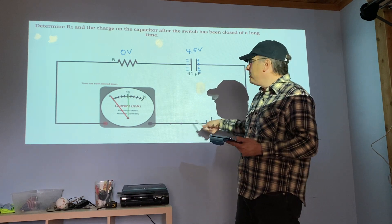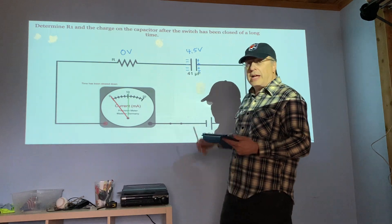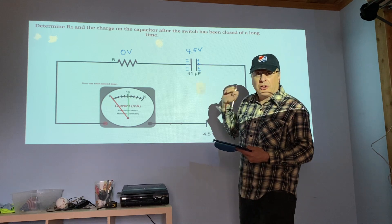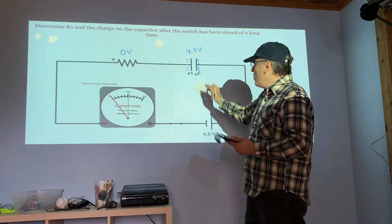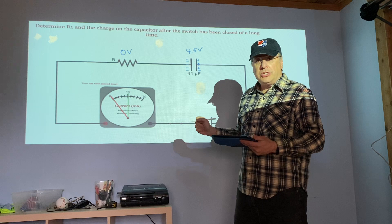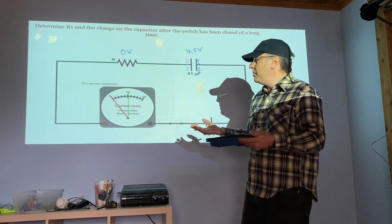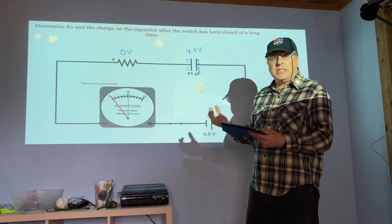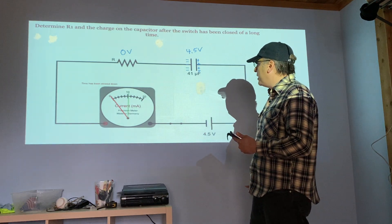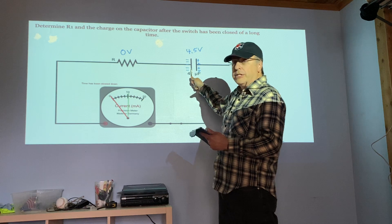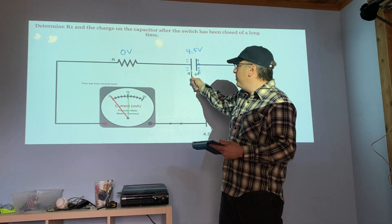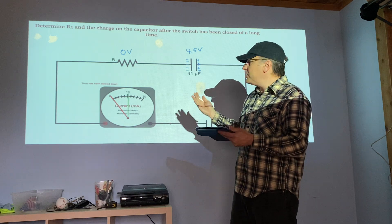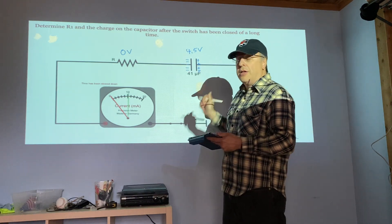The only time anything flowed through the circuit is when I first threw the switch. That's because this capacitor had nothing on it, it was providing no opposition, it acts like a wire. That's the important thing: when the capacitor is uncharged it may as well be a wire. But as soon as it starts to build up charge it starts resisting the flow of more charges, and when it's fully charged, the capacitor acts like an open switch.